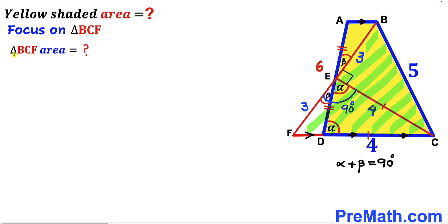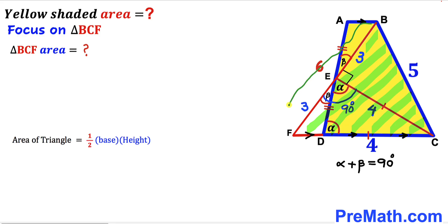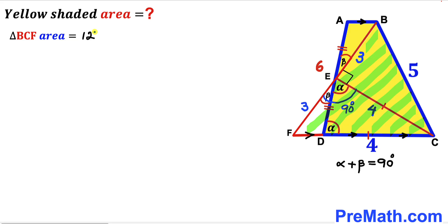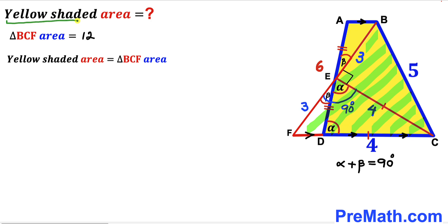We focus on big triangle BCF whose side lengths are 4, 5, and 6, and we calculate its area. Recalling the area formula: area equals one-half times base times height. The base of this triangle is 6 units and the height is 4 units. So the area of triangle BCF is one-half times 6 times 4, which gives us 12 square units.